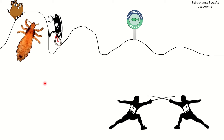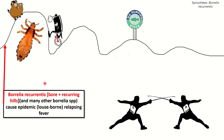This is a lesser known bug, but quite an interesting bug, and while pretty low yield for Step 1, it may come up. Borrelia recurrentis is represented here as this boar for Borrelia and recurring hills for recurrentis. The name actually tells you a lot about what's going on with the disease and the pathophysiology of it.